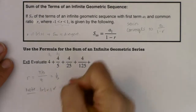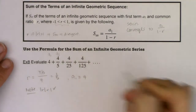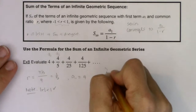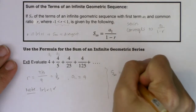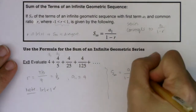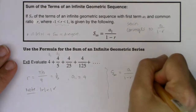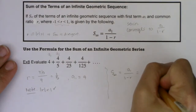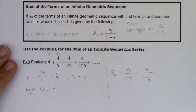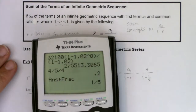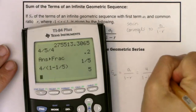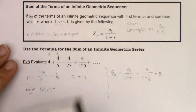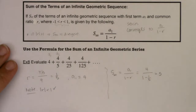Another key piece of information: a sub 1 is equal to 4. So S sub infinity equals a sub 1 over 1 minus r, which is 4 over 1 minus 1/5. I'll be careful to put parentheses around that denominator in my calculator because it's a binomial. When I do that, I get 5.